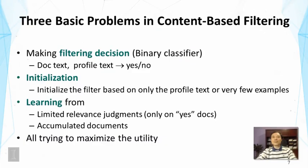The three basic problems in content-based filtering are: first, the filtering decision — a binary classifier that takes a document and a user profile and says yes or no; second, initialization — getting the system started from only a limited text description or very few examples; and third, learning from limited relevance judgments, since we can only learn from documents we have already delivered to the user. If we never deliver a document, we can never know whether the user likes it, though feedback can accumulate from the entire history.